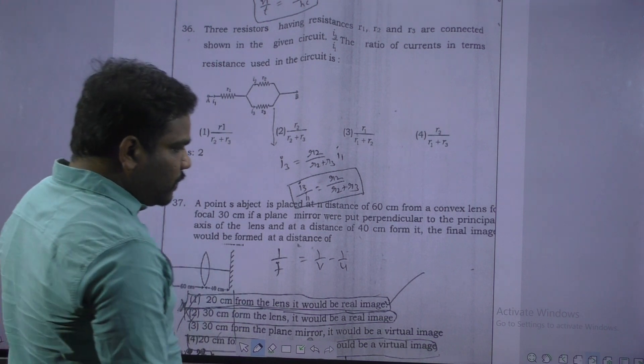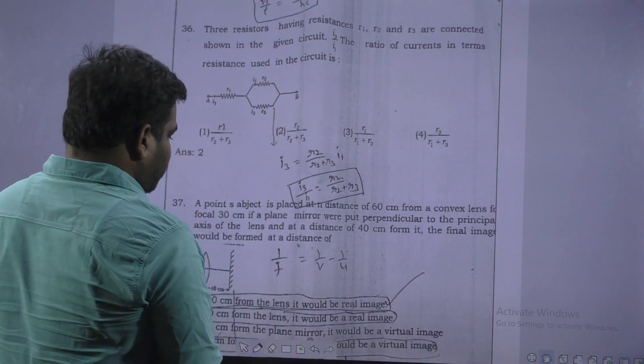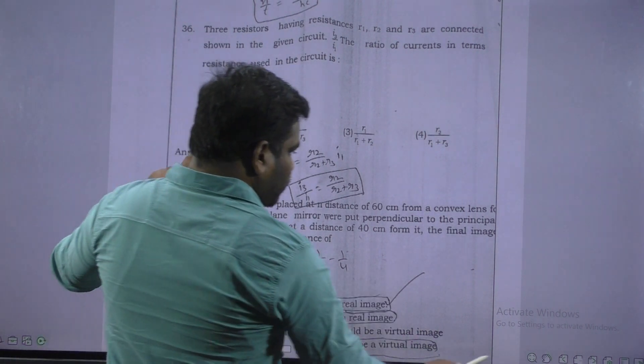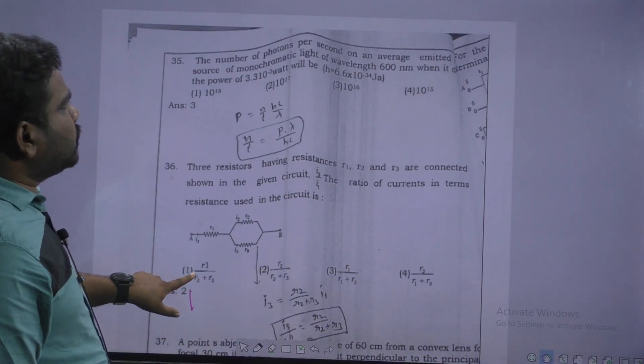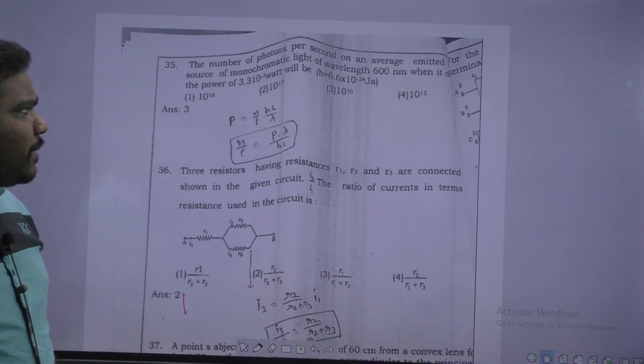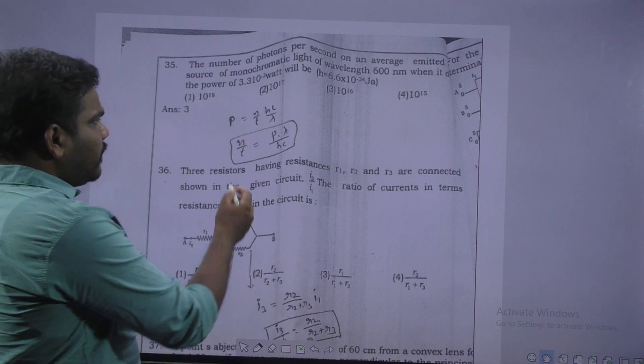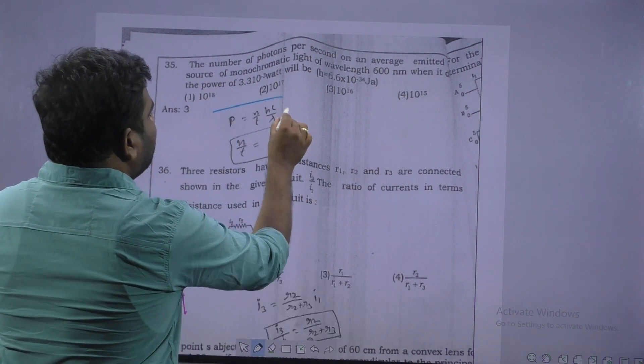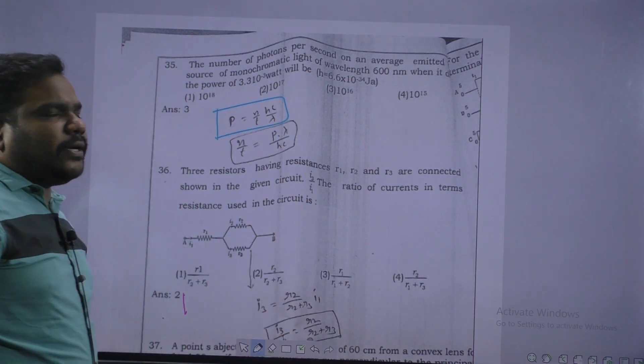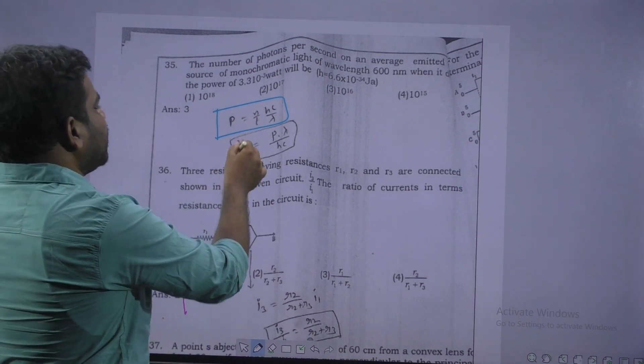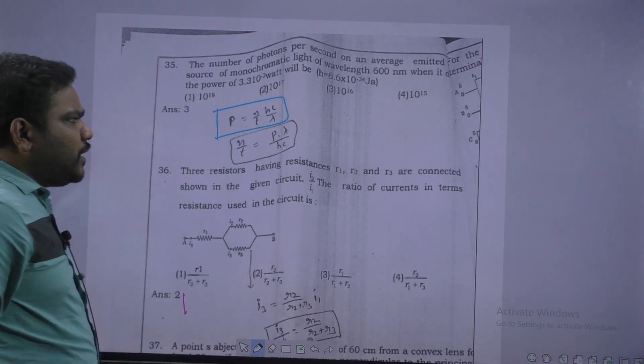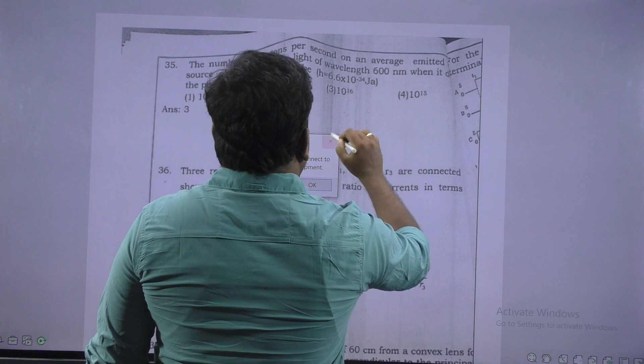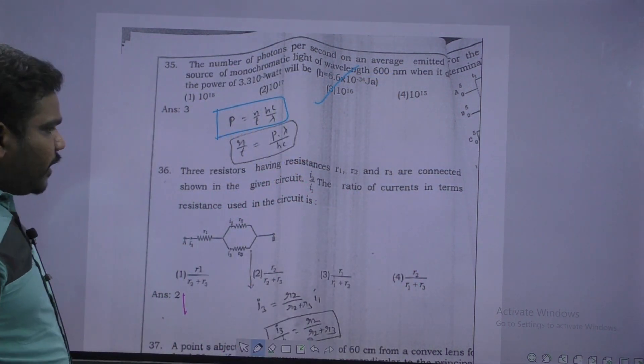Next question. Photoelectric effect problem, number of electrons per second. We know power formula basically. P is equal to N by T into HC by lambda. Just write down N by T, number of electrons per second. P lambda by HC. All values are there. Just substitute and simple value get. 3 into 10 power 16.